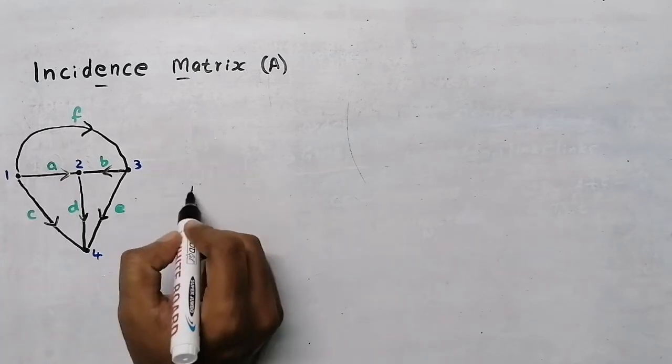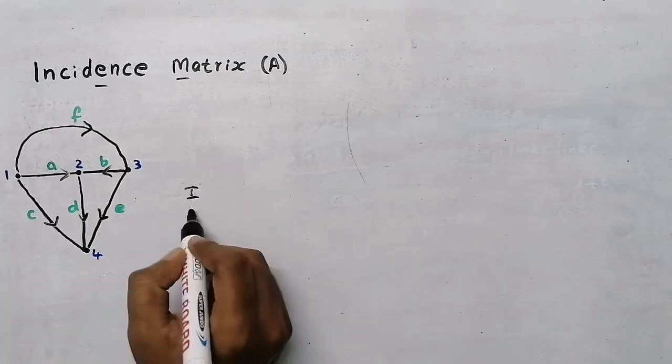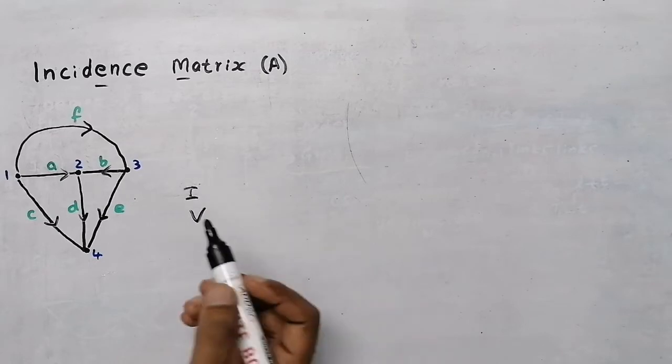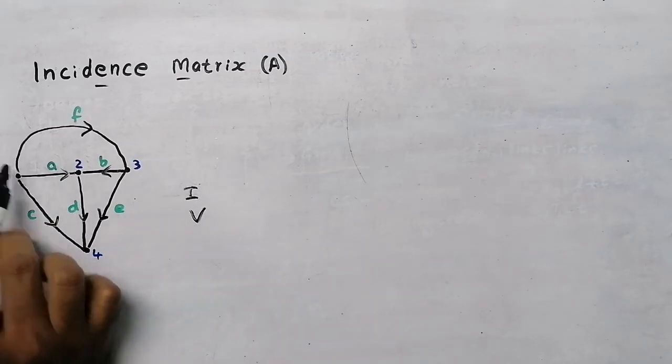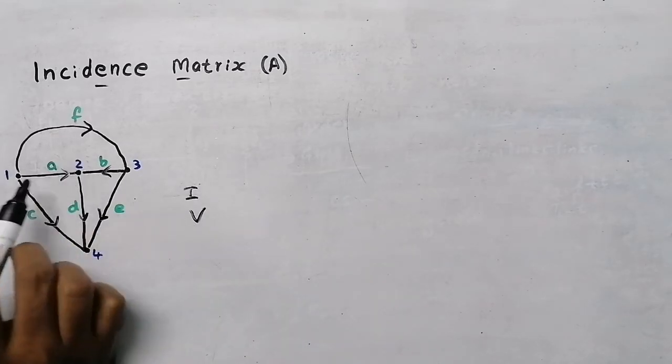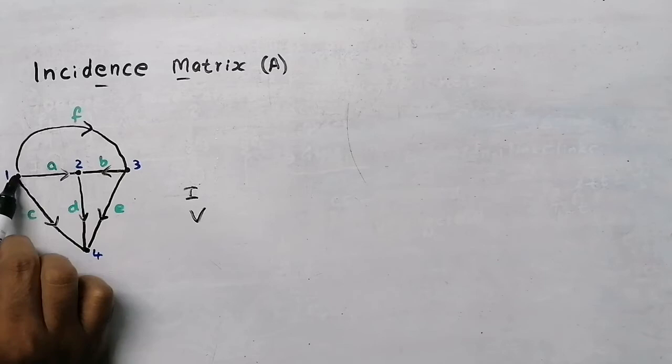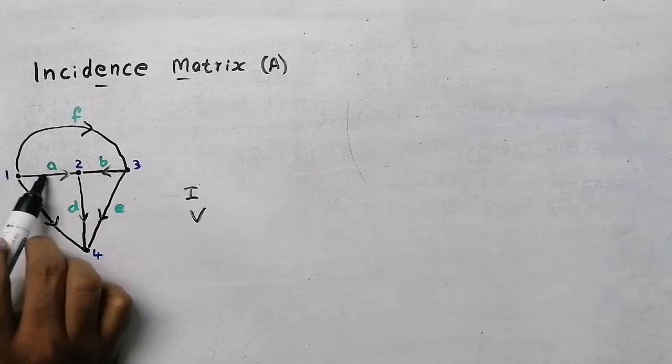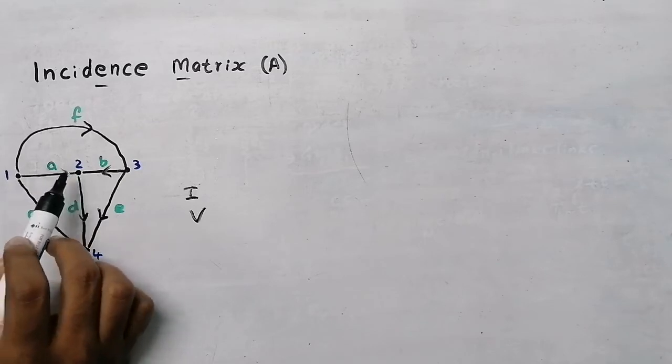We can tell the direction in terms of current and also in terms of voltage. If this node has high voltage and the other node has low voltage, then the direction is from high voltage to low voltage.